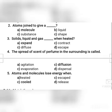Number four: the spread of scent of perfume in the surrounding is called — agitation, diffusion, evaporation, or dispersal? The correct answer is number c — diffusion. Number five: atoms and molecules lose energy when — heated, escaped, cooled, or released? The correct option is option number c — cooled.